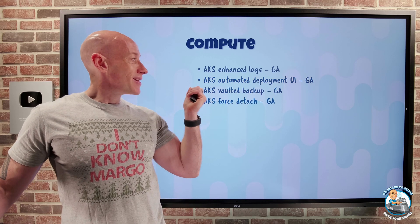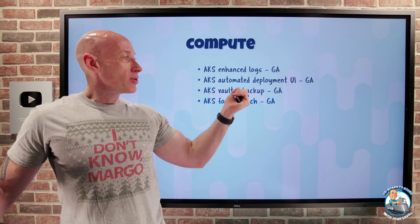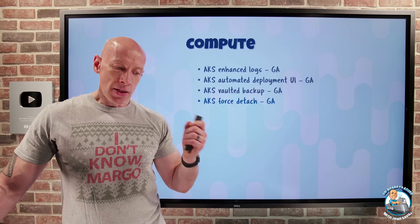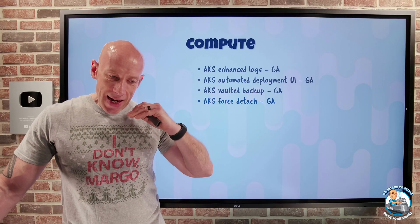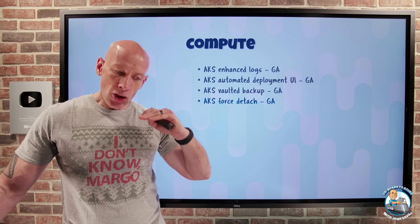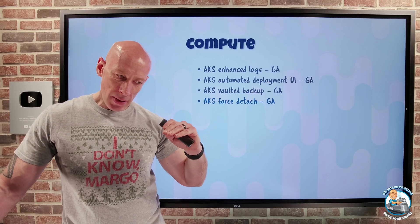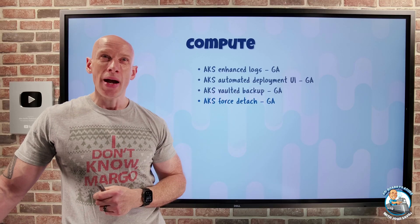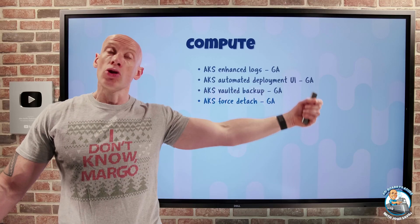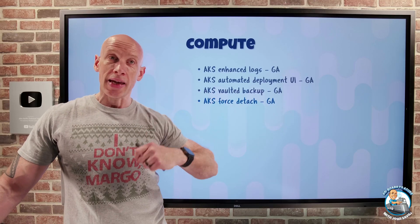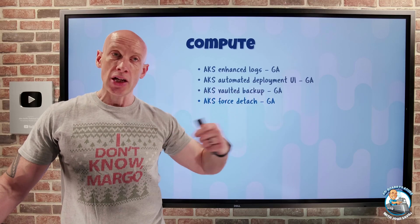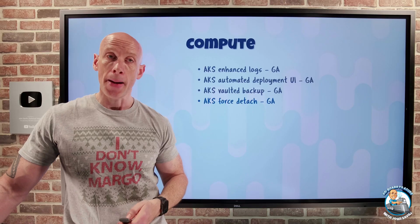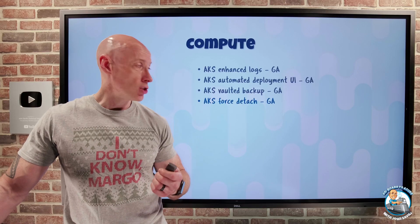The AKS vaulted backup has also gone GA. This is another tiered option — the vault tier — so you get separate storage, geo-replication, and up to 10 years of actual retention.